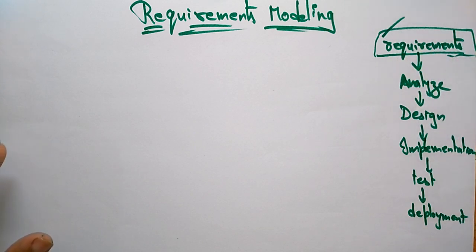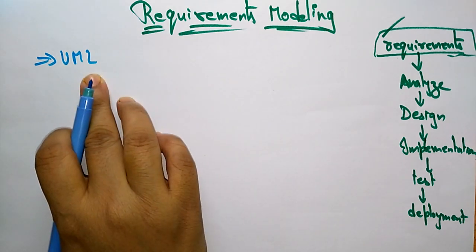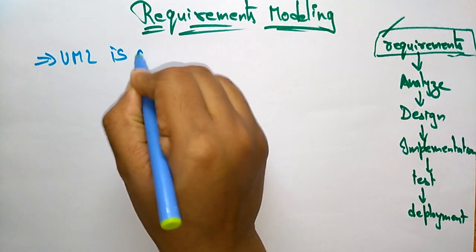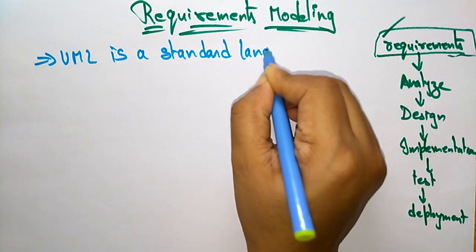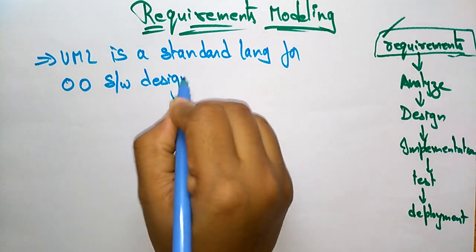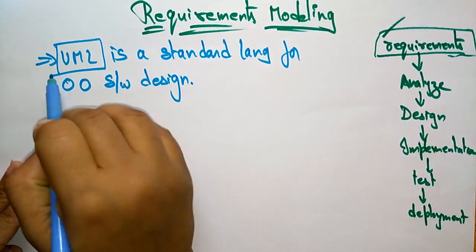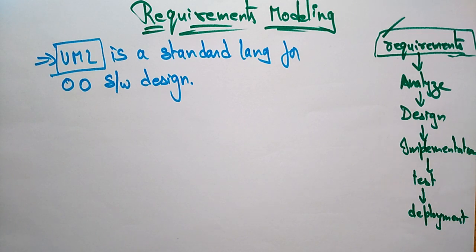Now let us see the first stage: requirement modeling. For designing any stage, the standard language we use is UML — Unified Modeling Language. UML is a standard language for object-oriented software design. If you want to design any object-oriented software, you have to use UML. Using the Unified Modeling Language, we are going to design and model the requirements.